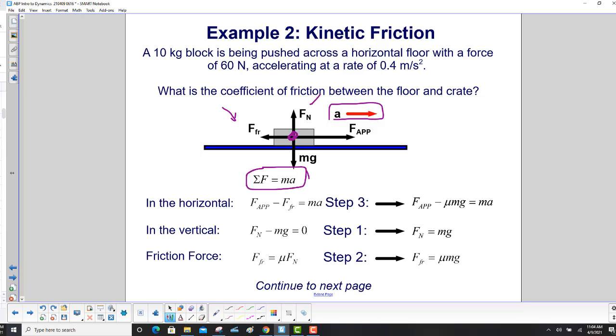So, once again, Newton's second law, but we're going to apply it in a bunch of different places. In the horizontal, we have the applied force minus the friction force equals ma. In the vertical, we have the normal force minus mg equals zero. Remember, up is going to be positive, and to the right is also going to be positive. And then we have the friction force, which is mu times normal.